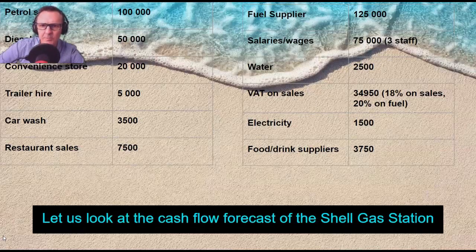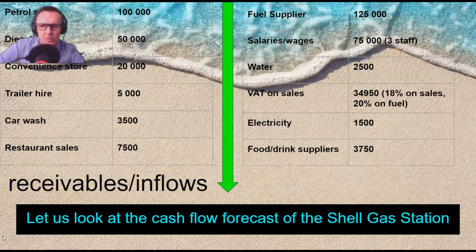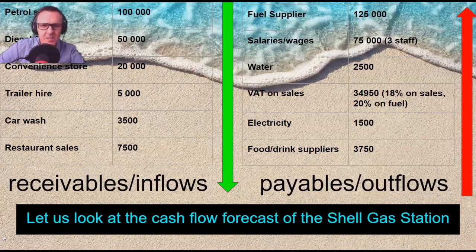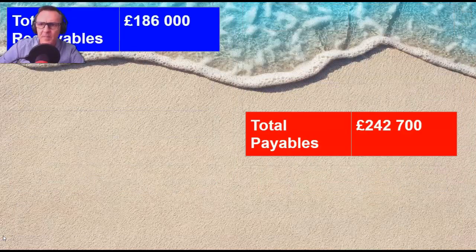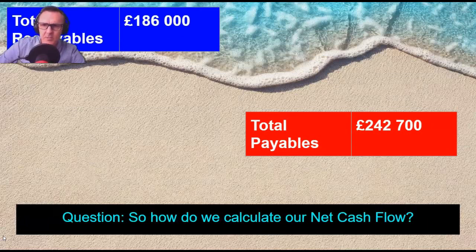So I've got two lists here: on the left we've got our inflows coming in — these are all estimates or made-up numbers, sometimes referred to as estimates. They are called receivables or inflows. And on the right you have your outflows. Let's look at this gas station — are they doing well? Are they in trouble? The VAT on sales on the payable side: VAT in the UK is normally 18% to 20% on fuel that the government charges. Under salaries and wages, we've got three staff working.